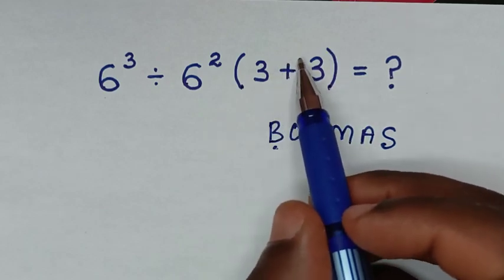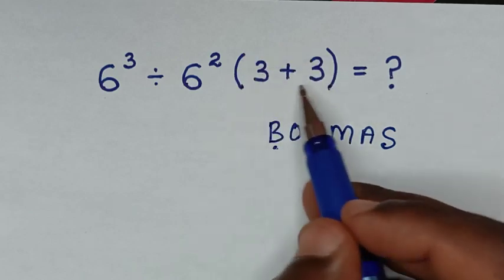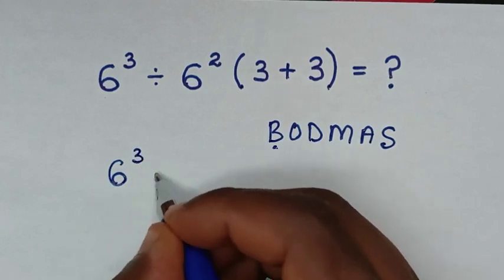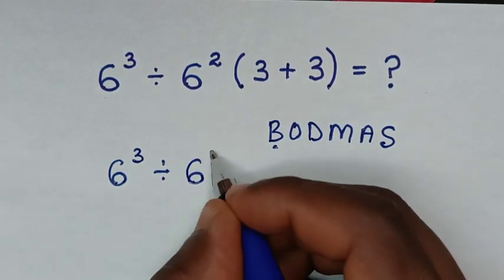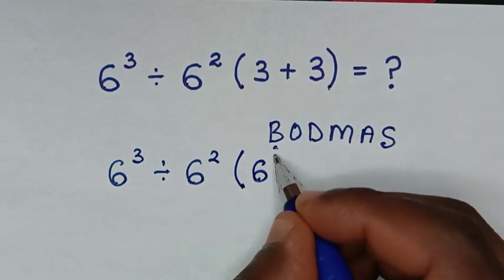So we'll start to deal with this operation inside this bracket, which is 3 plus 3. Then it will be 6 power 3 divided by 6 power 2 bracket, and 3 plus 3 is 6.